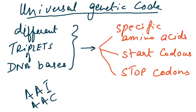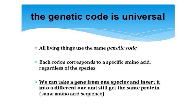These triplets code for specific amino acids, or they code for a start codon or a stop codon — so they only code for three things: specific amino acids, start codons, and stop codons. The word used in the genetic code is 'universal.' Universal means all living things — bacteria, fungus, eukaryote, prokaryote — all use the same genetic code.